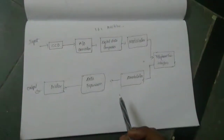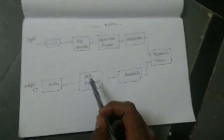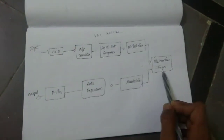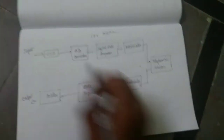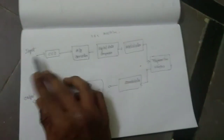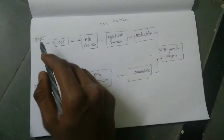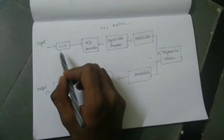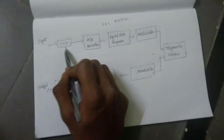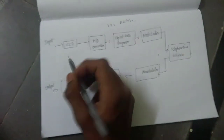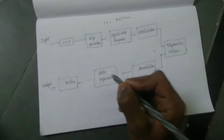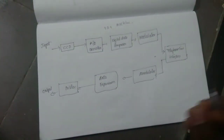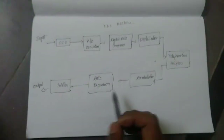This is my block diagram of the fax machine. For the fax machine, there are a total of 8 blocks. The first starting step block is the CCD — Charge Coupled Devices. CCD is a light-sensitive semiconductor device.